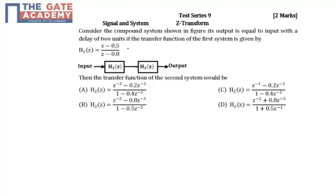H1(z) can be rewritten as (1 - 0.5z^(-1)) divided by (1 - 0.8z^(-1)), simply taking z common and canceling it.